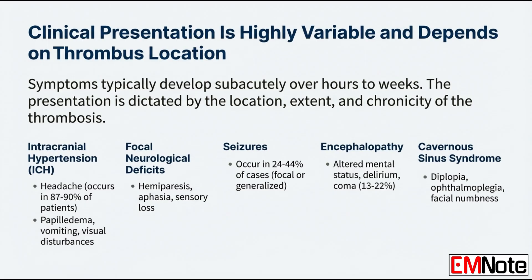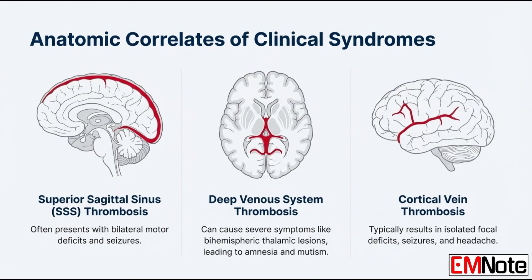Seizures occur in about 24 to 44% of cases, and profound encephalopathy or even coma in 13 to 22%. The clot's location also gives us important clues and allows us to connect anatomical patterns to specific deficits.